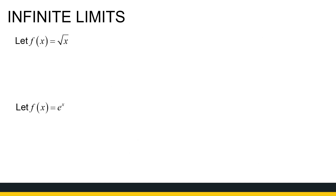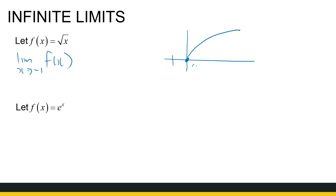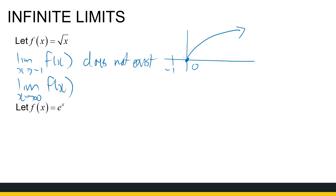The fact that a limit doesn't exist doesn't mean it necessarily goes to infinity. For example, with √x: the limit as x approaches −1 of this function doesn't exist because the function isn't even defined at −1, and there's no further information we can get. But interestingly, the limit as x approaches infinity of √x keeps climbing — it looks like it levels off but it just climbs slower and slower with no horizontal asymptote. So that one goes to infinity.